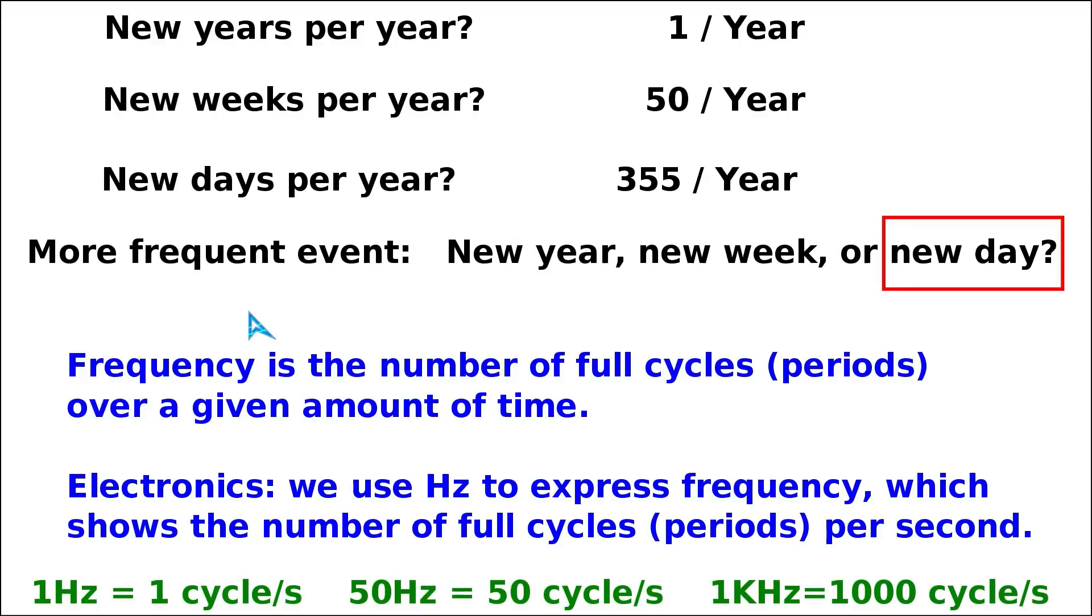The frequency is nothing else but the number of full cycles—or what we called periods—over a given amount of time. In our example, we used a year as the time, and we see that 355 days is more frequent because we have 355 periods per year.